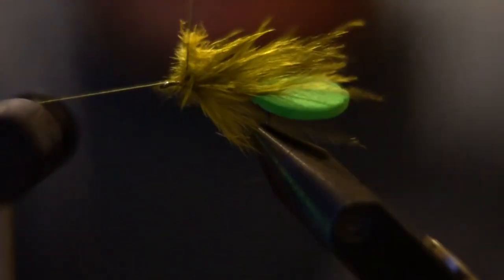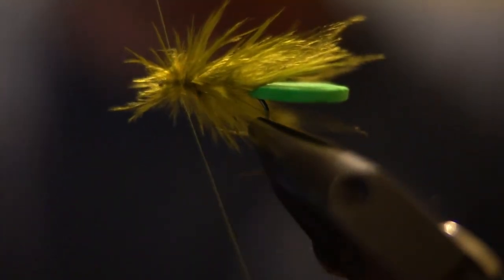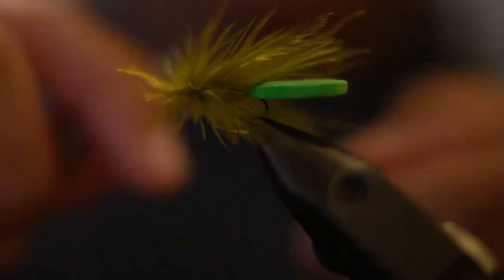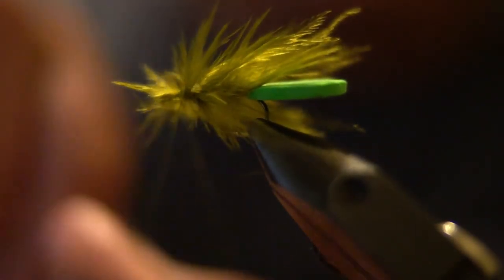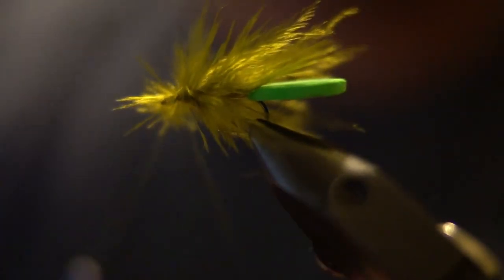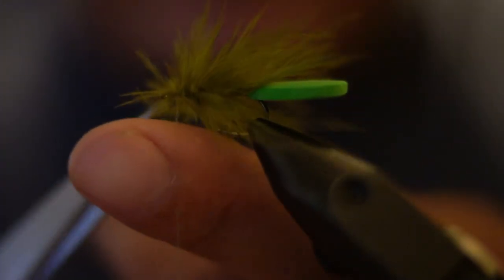Leave a little bit of room at the front, tie down the foam, secure the dubbing loop, and then snip off any excess.